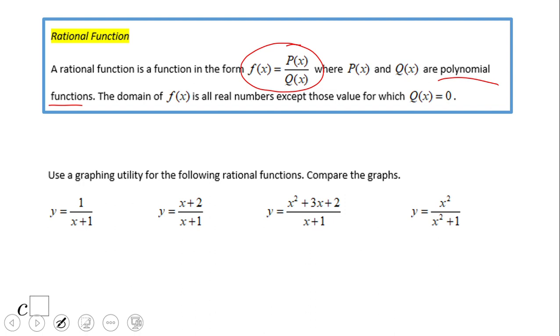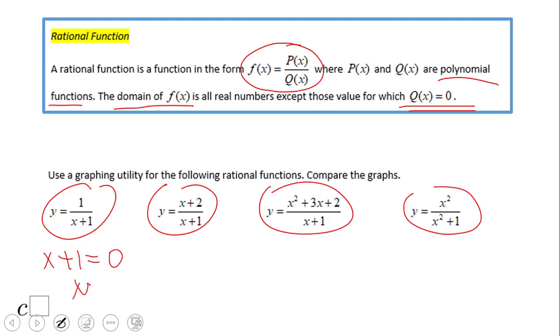We have here, for example, four rational functions: first, second, third, and fourth. A very important thing: the domain of a rational function is all real numbers except the ones that make the denominator zero. For example, here if we make x plus one equals zero, we get x equals negative one. We're gonna say the domain is all numbers except negative one.